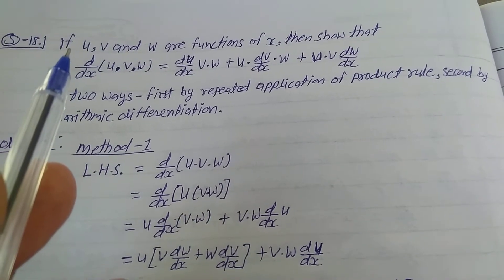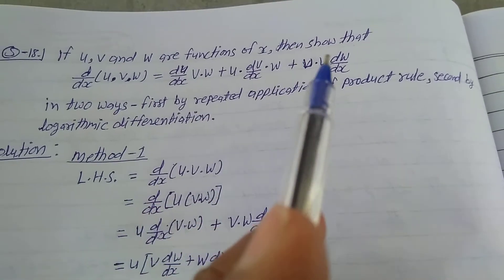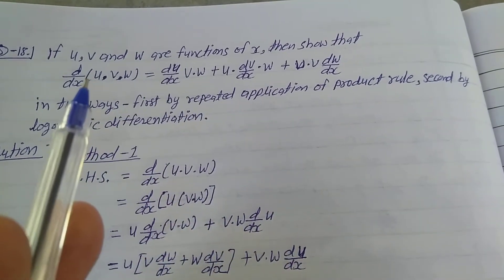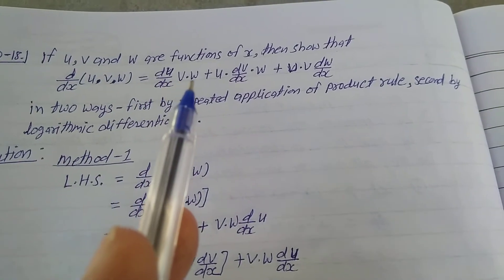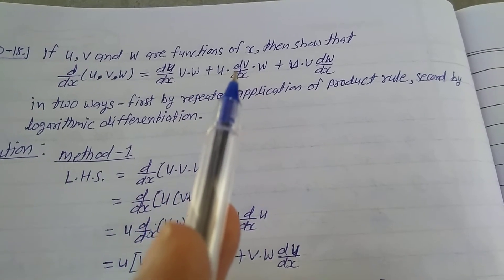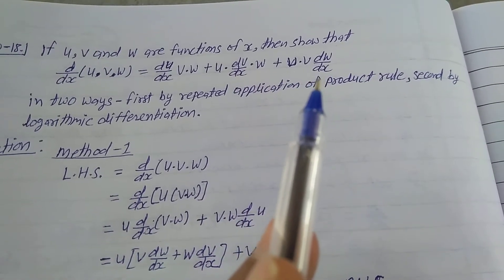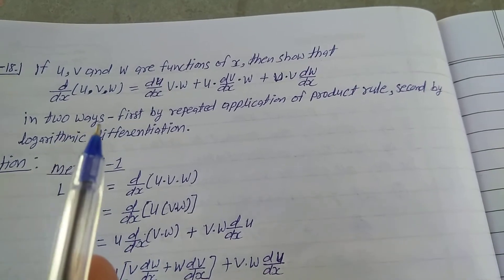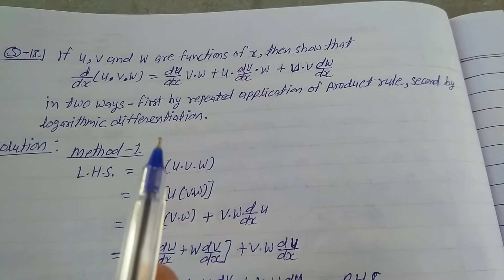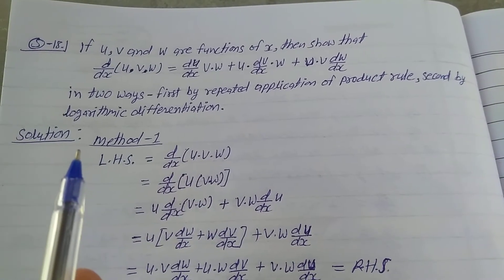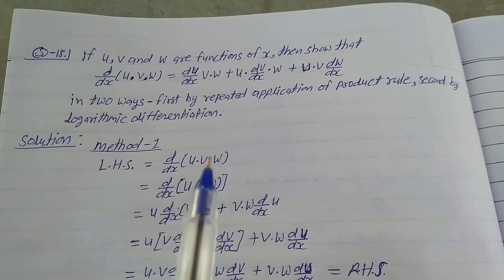Explain NCERT Exercise 5.5, Question 18, Class 12. If u, v, and w are functions of x, then show that d/dx of (u·v·w) is equal to du/dx·v·w plus u·dv/dx·w plus u·v·dw/dx, in two ways: first by repeated application of the product rule, second by logarithmic differentiation.